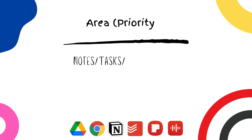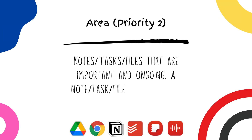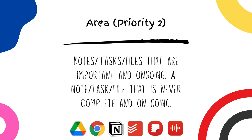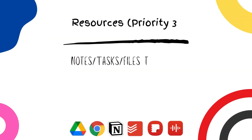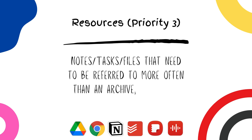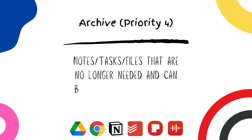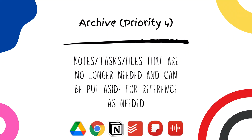Areas is something a little more ongoing — something like your taxes or client work. Something that is important but not quite a project with a deadline; it's ongoing and pretty important. Resources is something you want to save and use for later — like a blog post or an ebook you want to reference again. Archive is pretty self-explanatory: anything you're not currently using but want to save just in case gets archived.